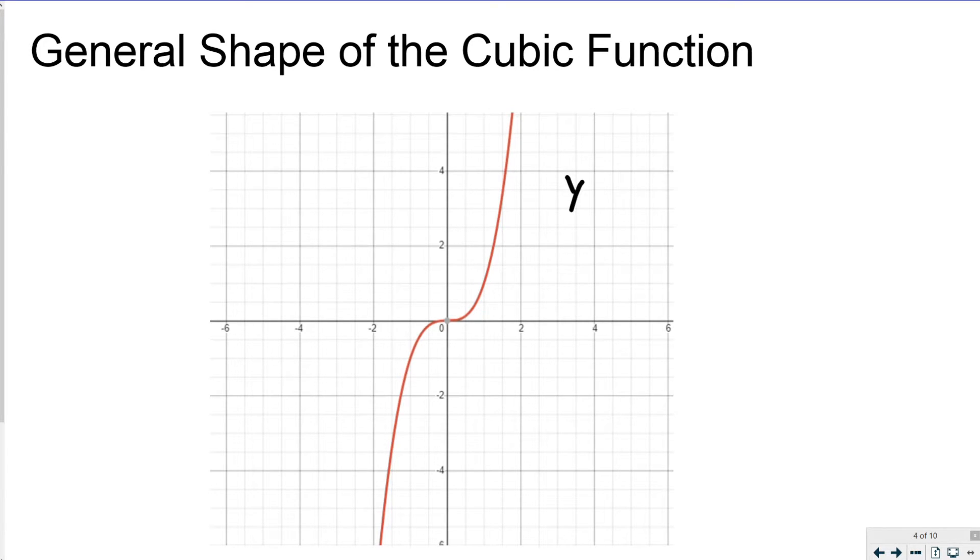Graphed here is the cubic function y equals x to the third power. In function form, we would write that as f(x) = x³. Functionally, there's no difference between f(x) = x³ and y = x³. But they are both represented by this red line here.